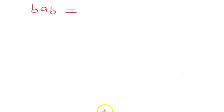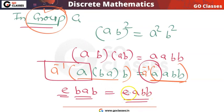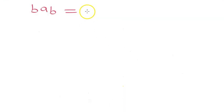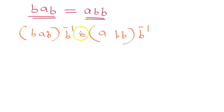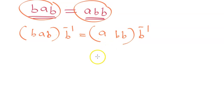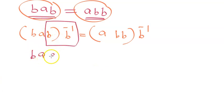We have bab = abb. Now we multiply both sides on the right by b⁻¹. Applying the associative property, b·b⁻¹ = e on both sides. So we get ba·e = ab·e, which simplifies since multiplying by the identity does not change the element.